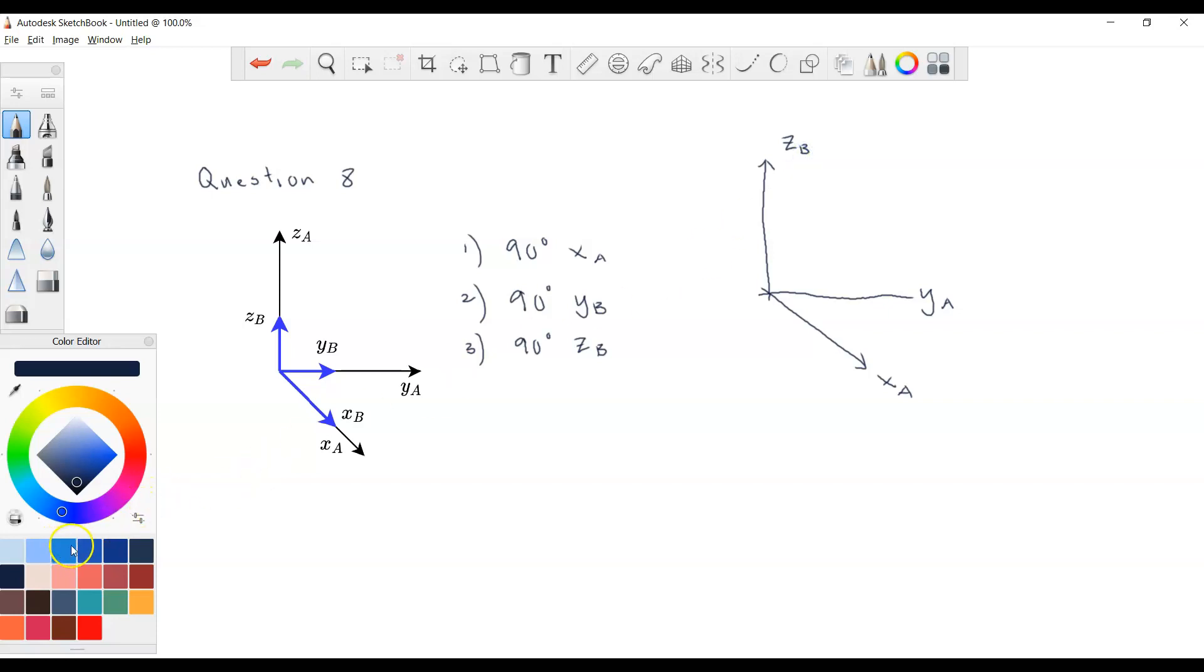So when we rotate 90 degrees about xA, so in the beginning, we have this. If we rotate the coordinate frame B with respect to xA, 90 degrees, we can see yB will appear up here. So this will be xB, but yB now will appear up here, because it has to be rotated clockwise, and then zB will be here. So this will be this one.